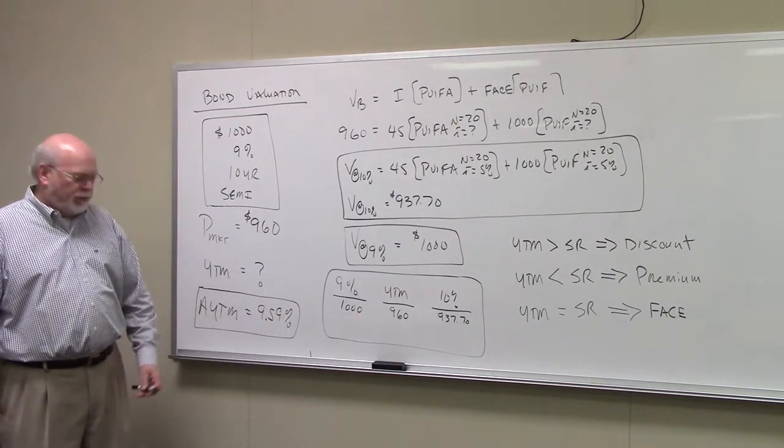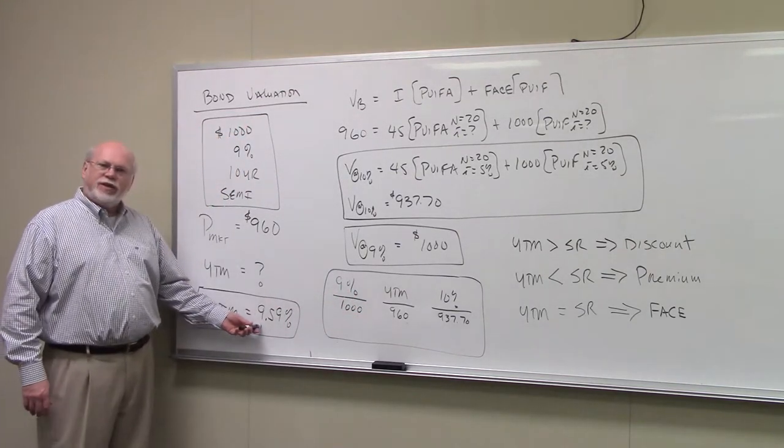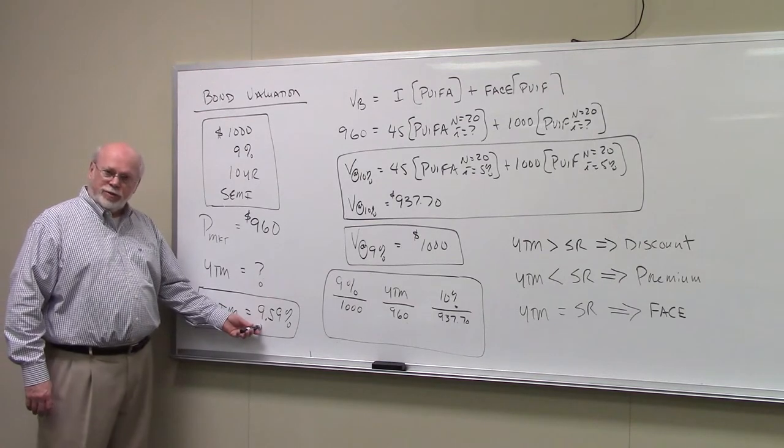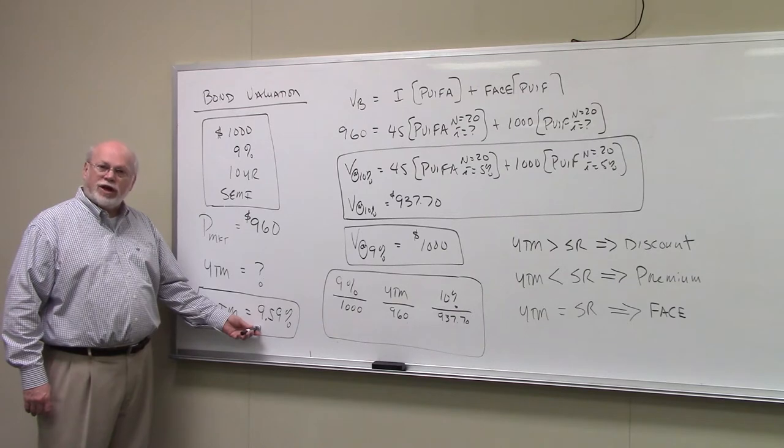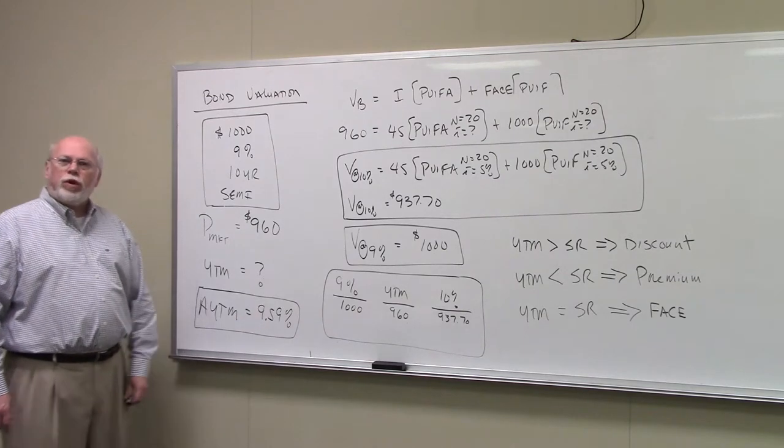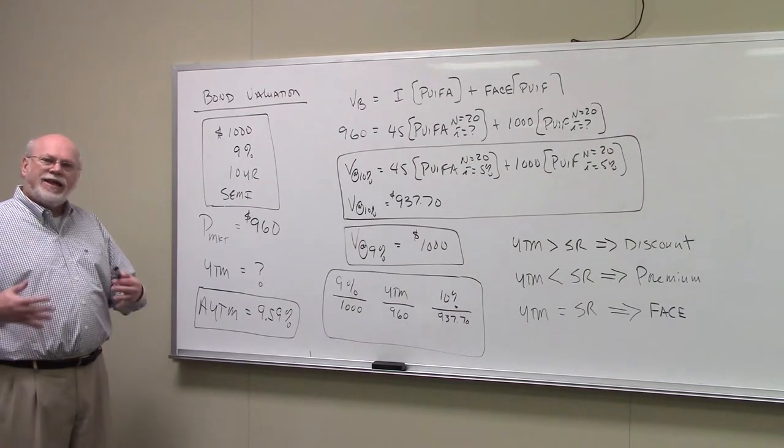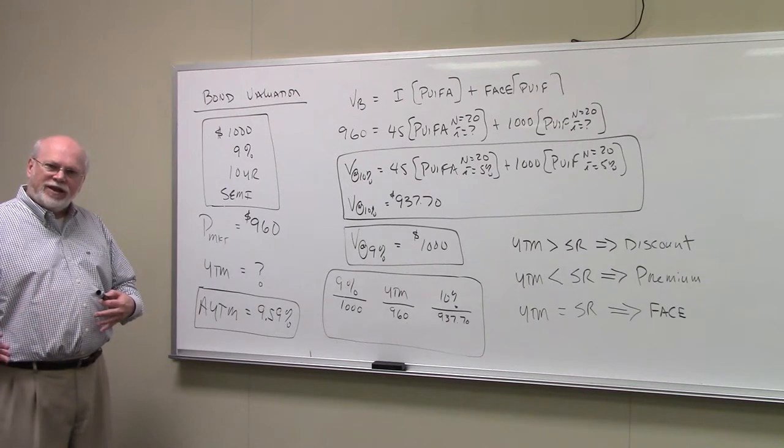Now in the last video, we found that the yield to maturity, the approximate yield to maturity of the bond, was 9.59%. That's the approximate yield. Now what we're going to want to do at the end of the day is interpolate to find the yield on the bond.